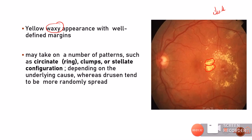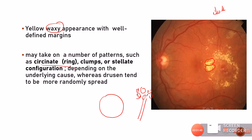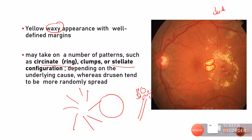Hard exudates can take a number of patterns. Sometimes they are arranged in a ring form — called circinate maculopathy when present in the macula — or they can be present in clumps near a leaking vessel, or in the form of a star, which is called the stellate configuration. The pattern depends on the underlying cause of the exudation.